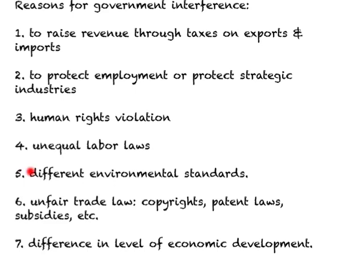Another reason is that there are different environmental standards in different countries. For example, if environmental standards are very stiff in the U.S., companies could move their production to another country where environmental standards are lax. Because complying with environmental standards raises the cost of production, companies relocate to countries where it is not an issue. These are called dirty industries — where companies move production from a country with high environmental standards to one with low environmental standards.